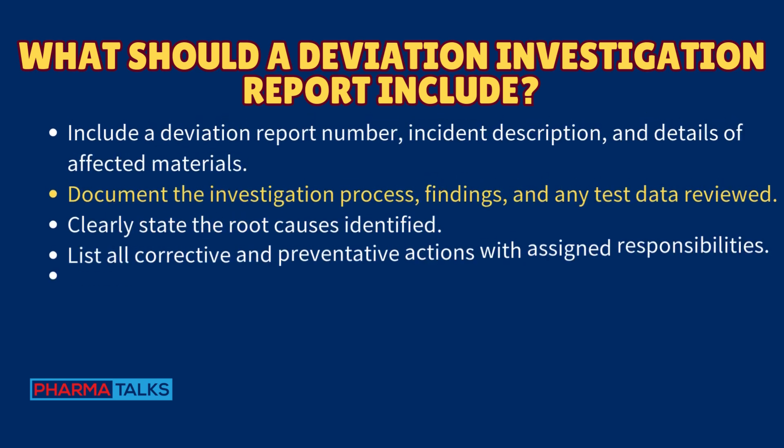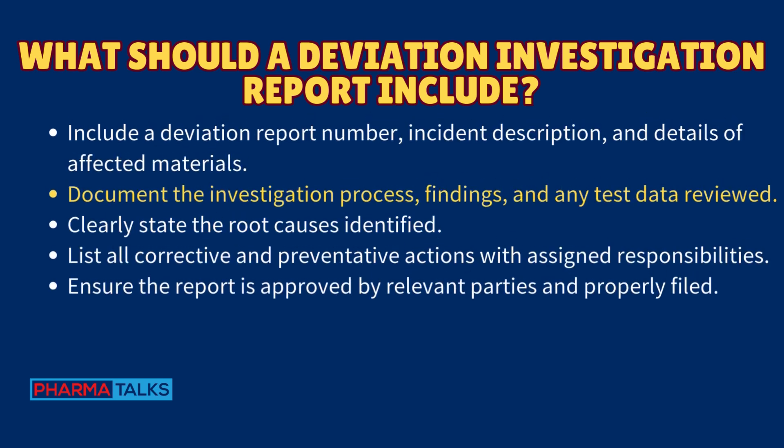A deviation investigation report should include a deviation report number, incident description, and details of affected materials. Document the investigation process, findings, and any test data reviewed. Clearly state the root causes identified, and list all corrective and preventative actions with assigned responsibilities. Ensure the report is approved by relevant parties and properly filed.